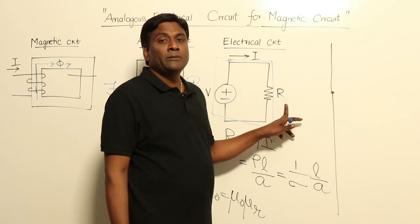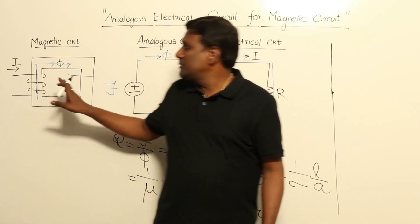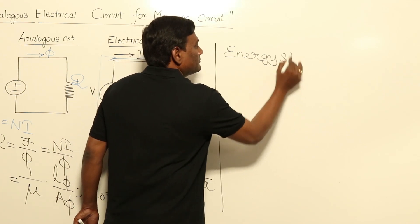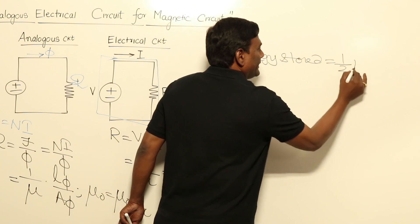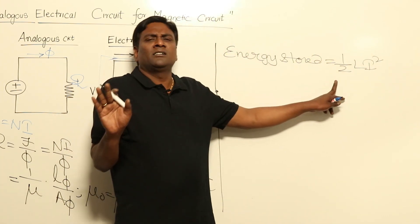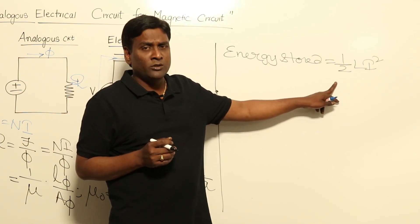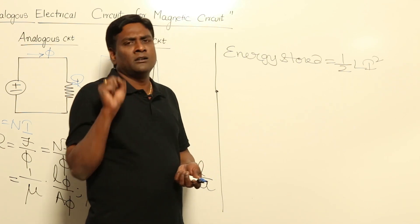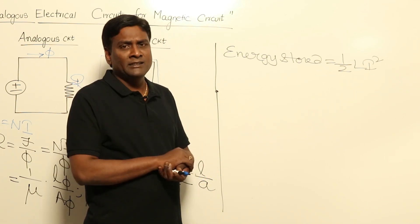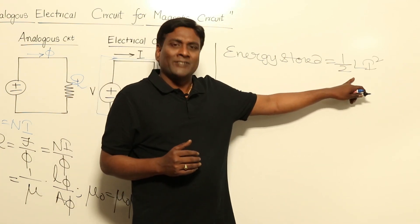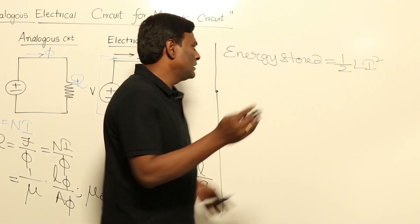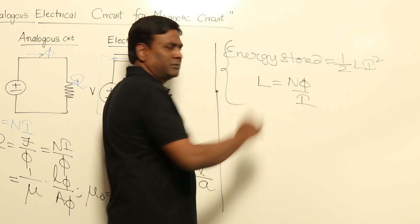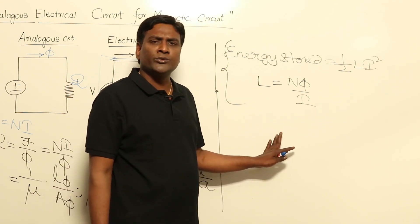Resistance is a power-absorbing element and inductance is a power-storage element. Energy stored in an inductor equals ½LI². We need not remember any separate formula. Inductance L equals Nφ divided by I. If you remember these two things — ½LI² and L = Nφ/I — you need not remember anything more. We will directly derive any required formula while solving GATE questions.